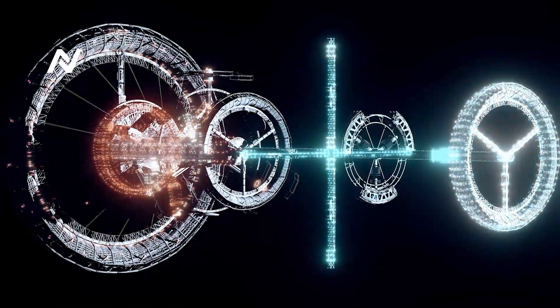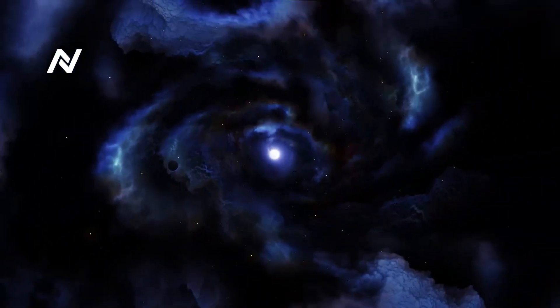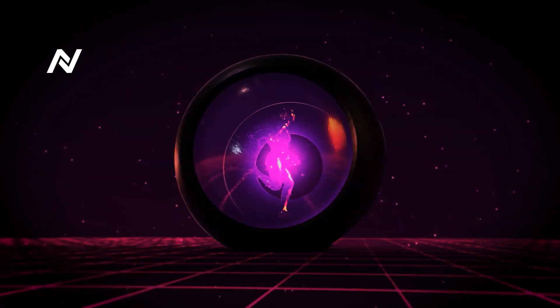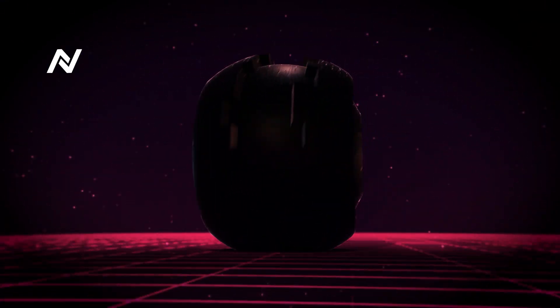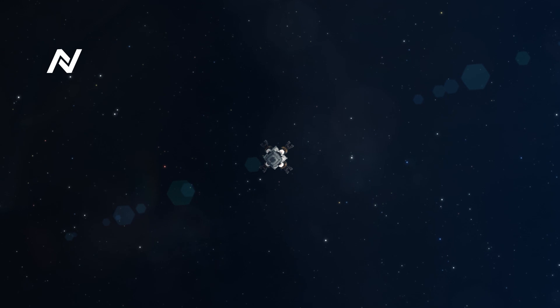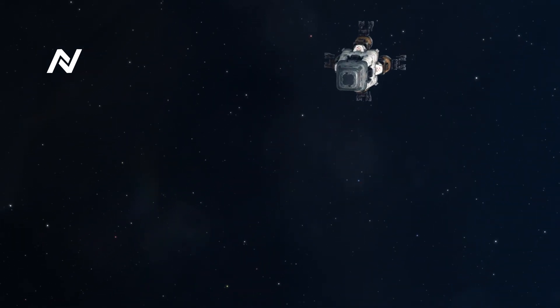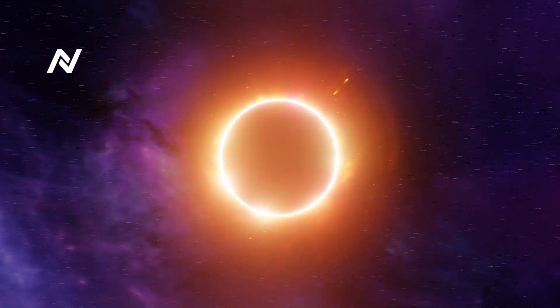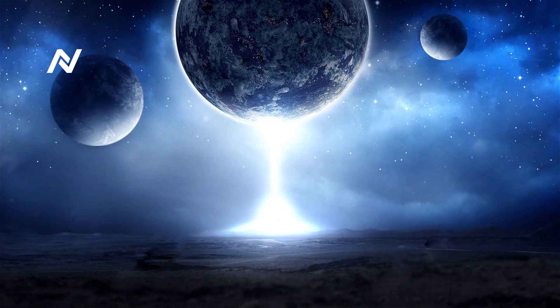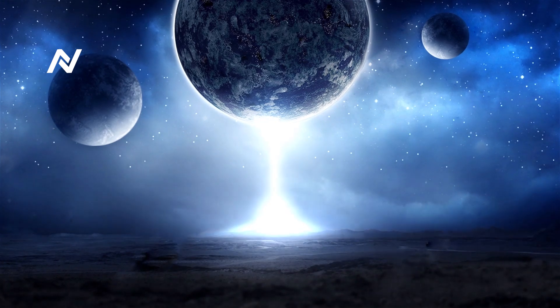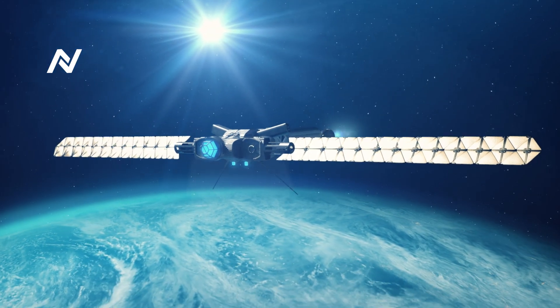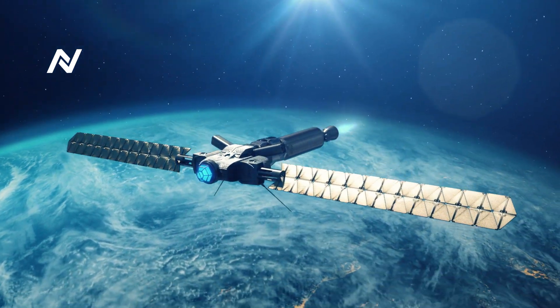Imagine if we could actually see space-time, the very fabric of the universe that we normally can't perceive. What would the world look like if we could visualize the warping of space and the stretching of time? Imagine watching light bend around planets or time slow down near a black hole. In this video, we explore the mind-bending concept of seeing space-time and how it would transform our understanding of reality, the universe, and even the flow of time itself.